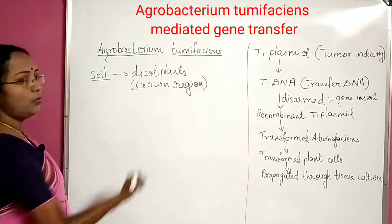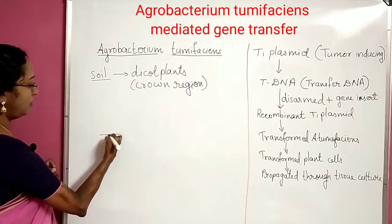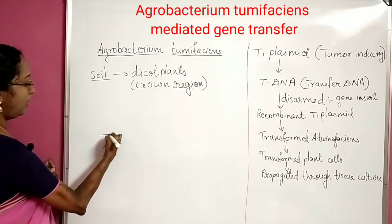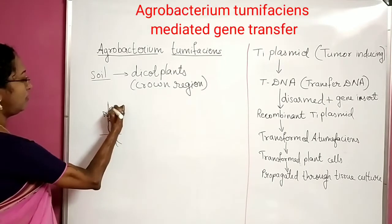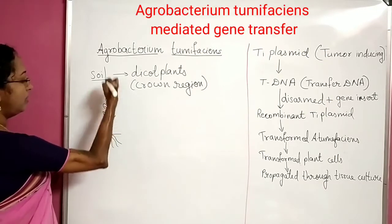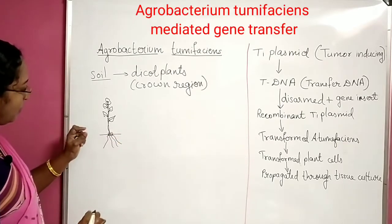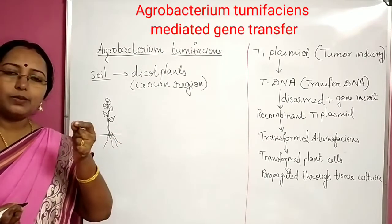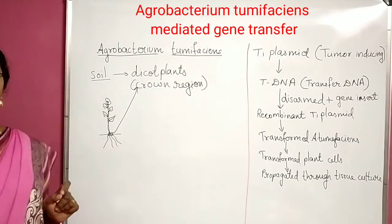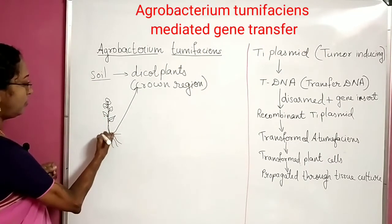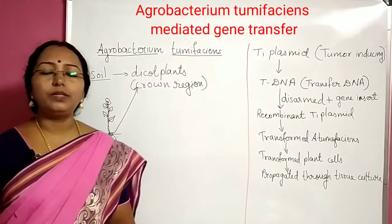We should know what the crown region of a plant is first. Let me draw a rough figure. If this is the root region of a plant and you have the shoot region above — with leaves, flowers, fruits — the region joining the root as well as the stem is called the crown region of the plant. Since this is a soil bacterium, naturally it will be present in the soil, and this soil bacterium affects this crown region.